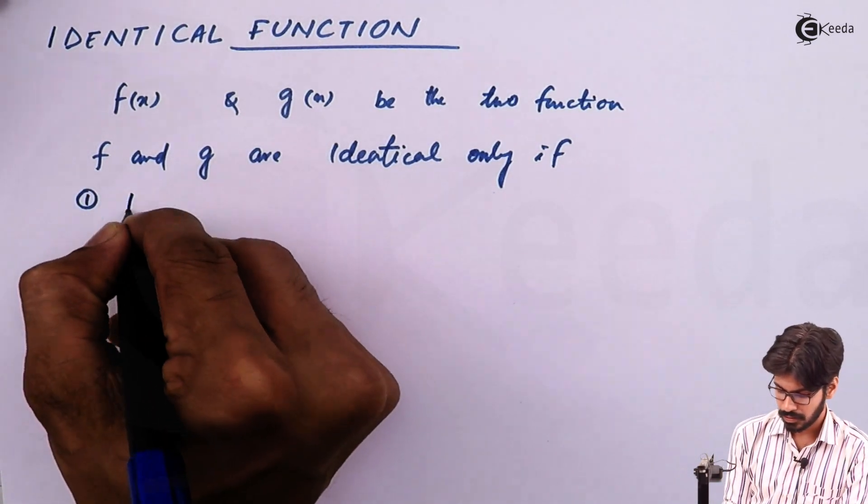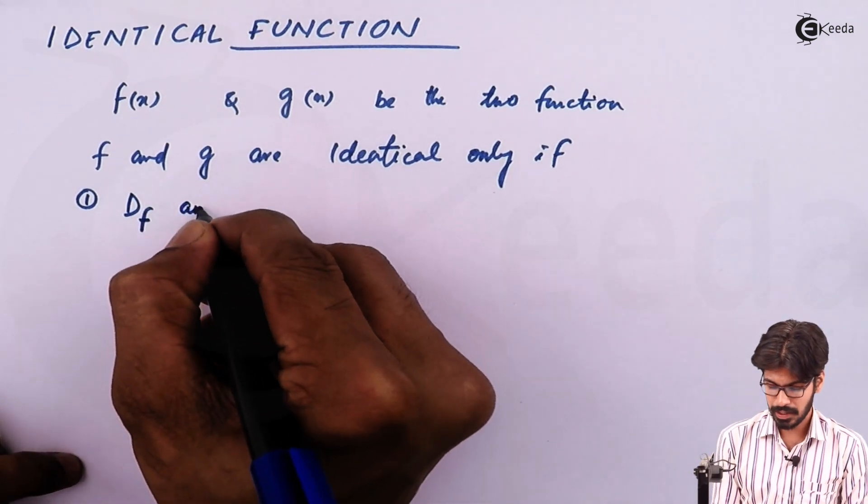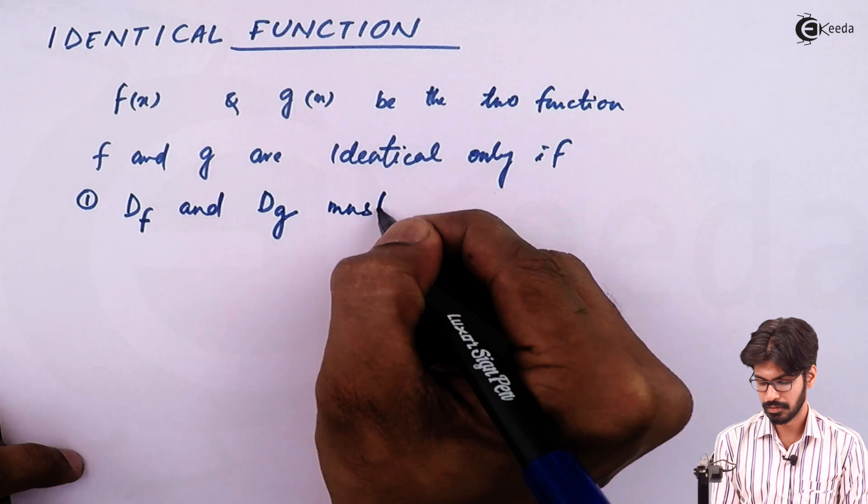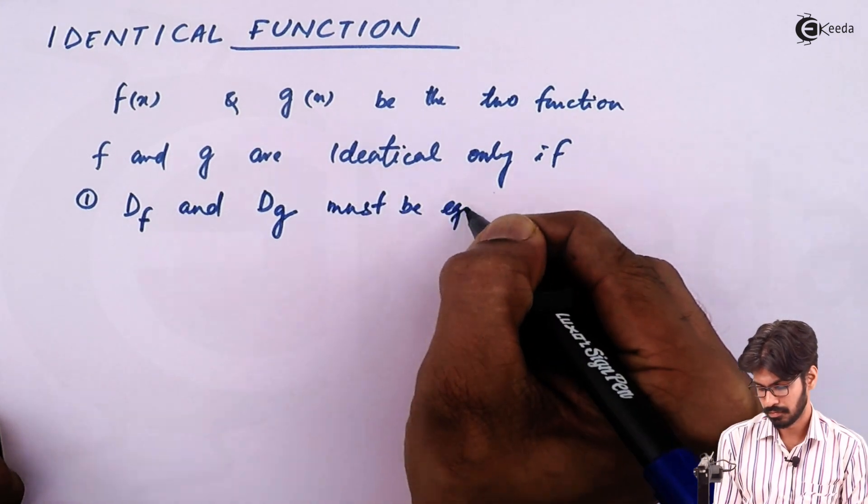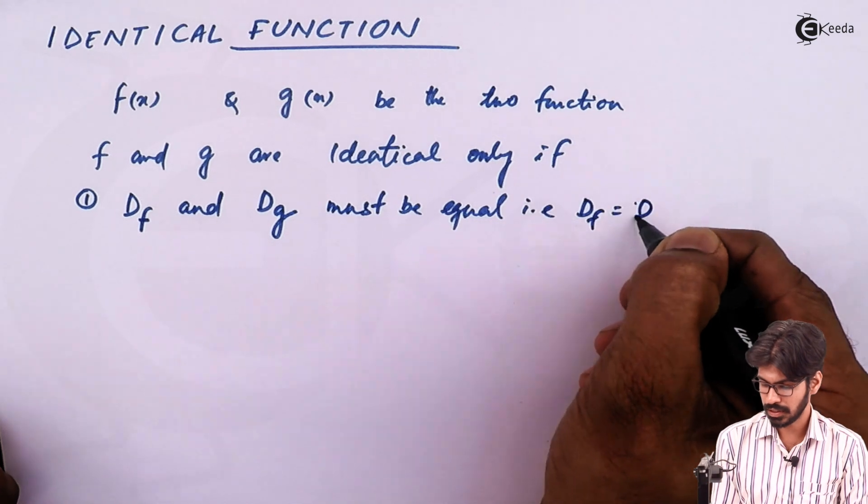The conditions are domain of f, that is Df, and domain of g must be equal, that is Df = Dg.